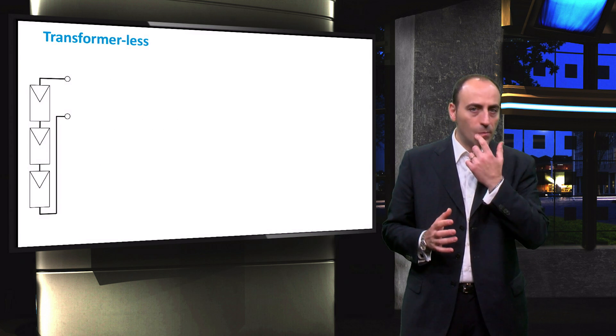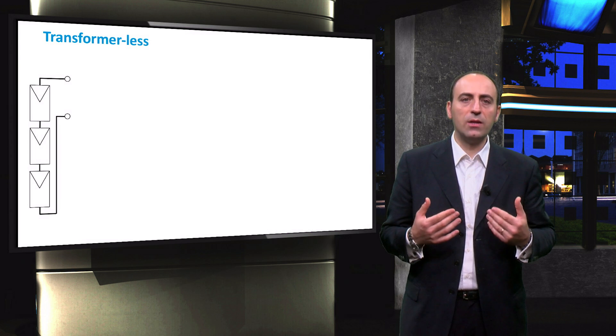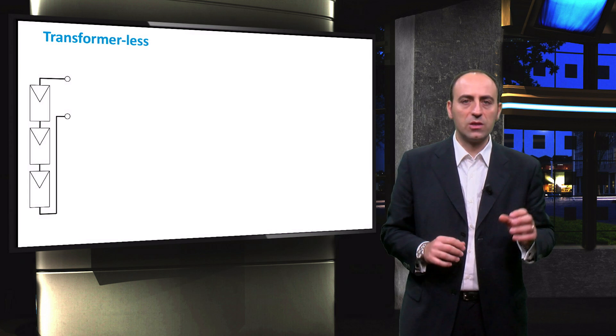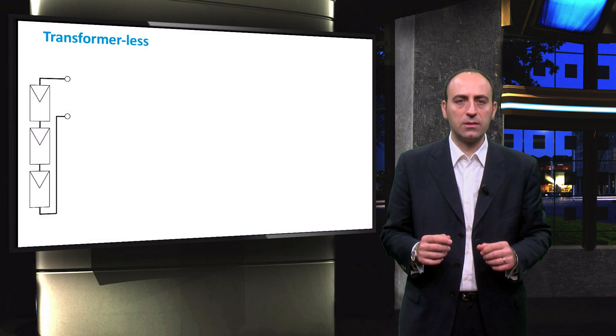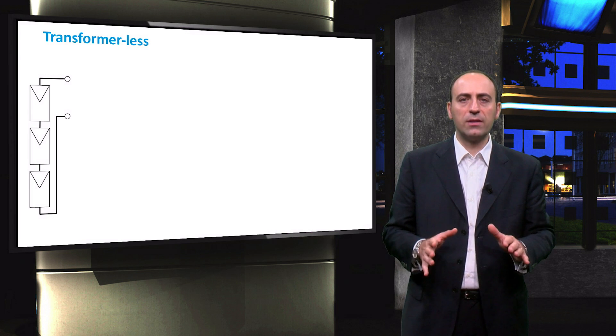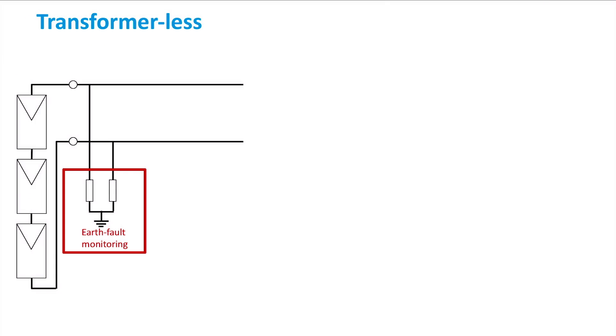Nowadays, most of the new string inverters are designed without a transformer. We are going to see why and what is the difference between transformer-based and transformerless concepts. First of all, the PV system needs to be connected to ground, and it is equipped with an earth fault monitoring system.